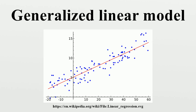Logically, a more realistic model would instead predict a constant rate of increased beach attendance. Such a model is termed an exponential response model. Similarly, a model that predicts a probability of making a yes-no choice is even less suitable as a linear response model, since probabilities are bounded on both ends.